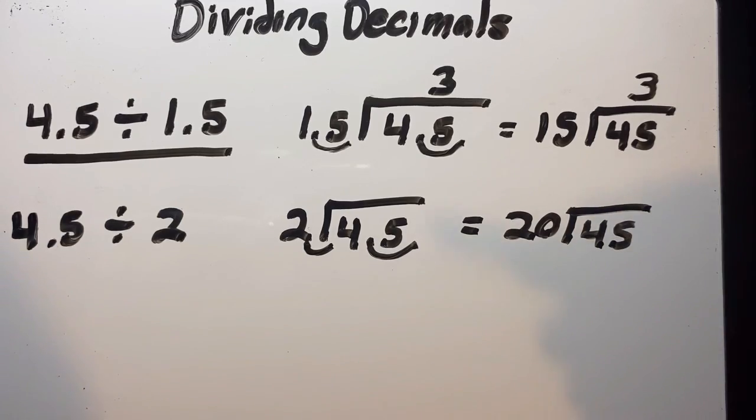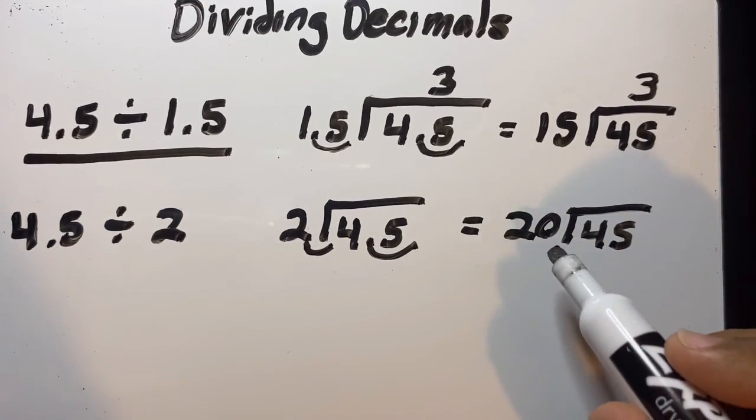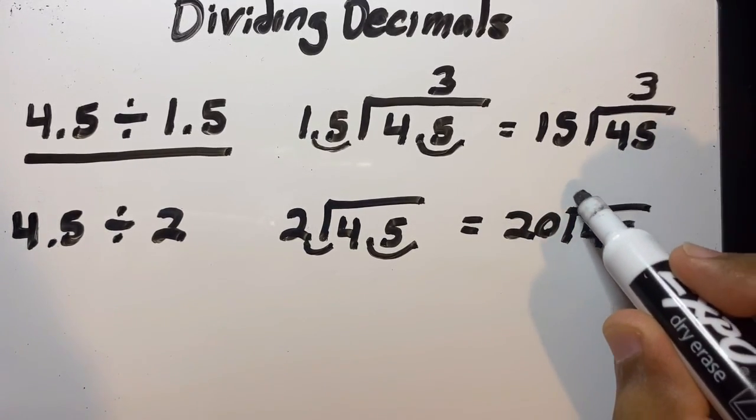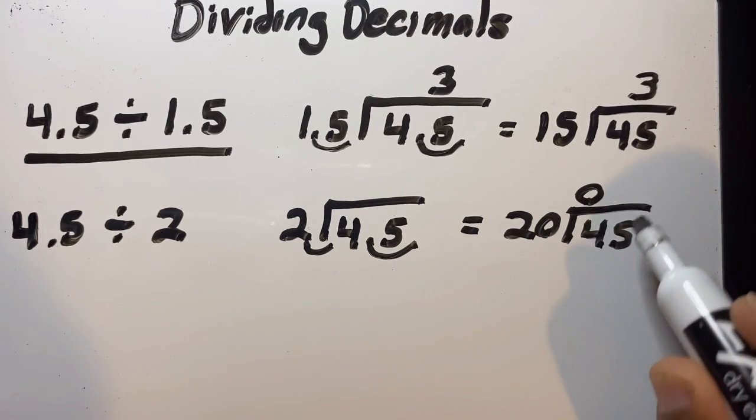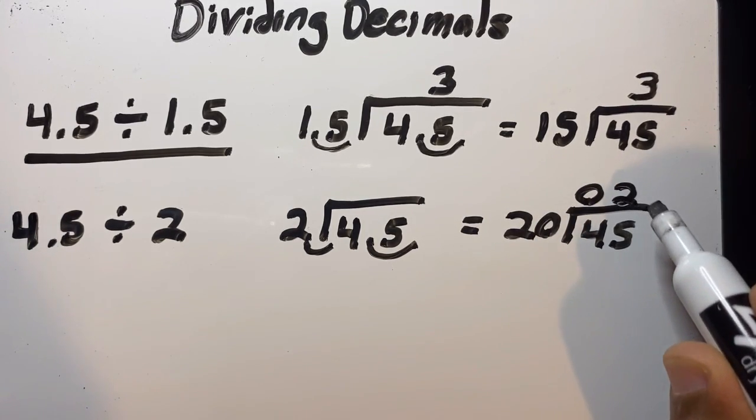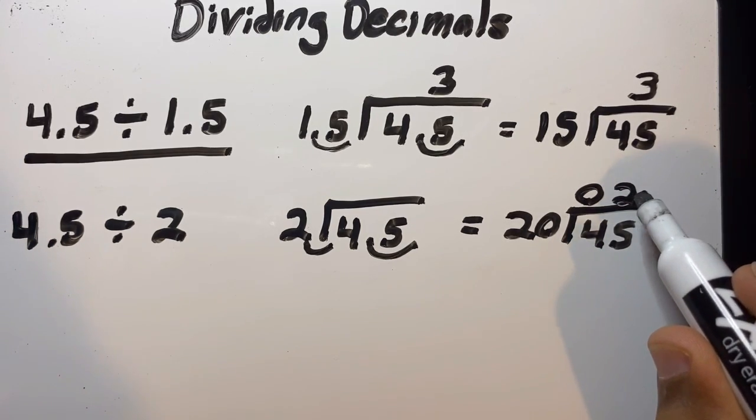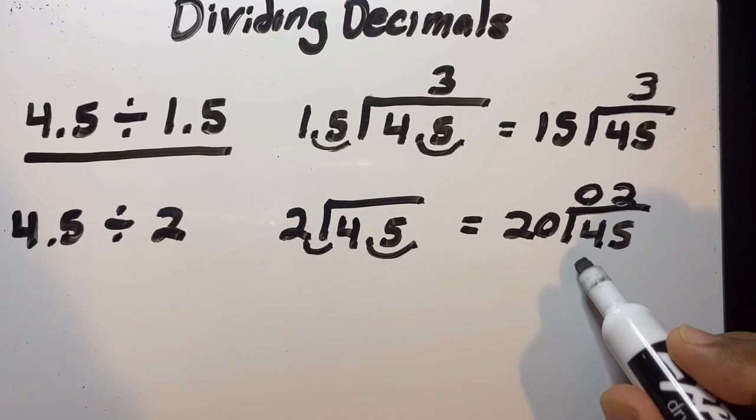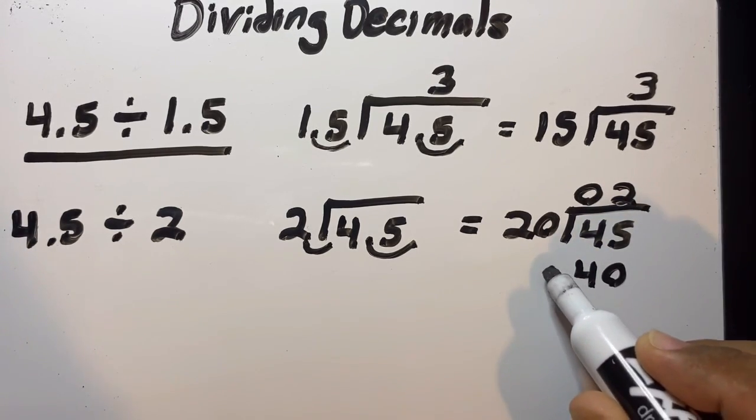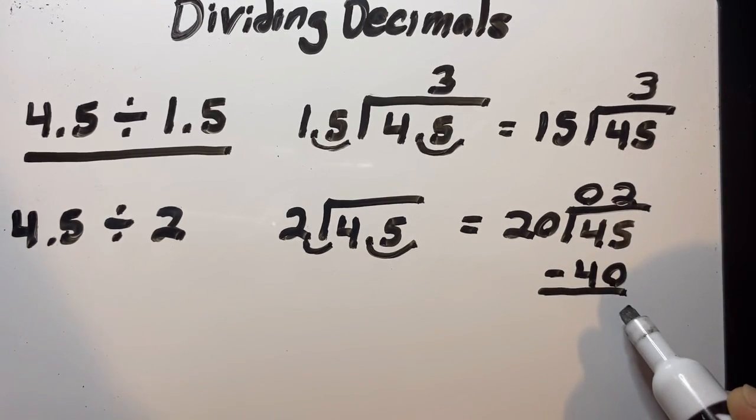Then we'll do the operation like normal. 20 cannot go into 4, and 20 can go into 45 at least two times. So we're going to go to the next step: 2 times 20 is 40.